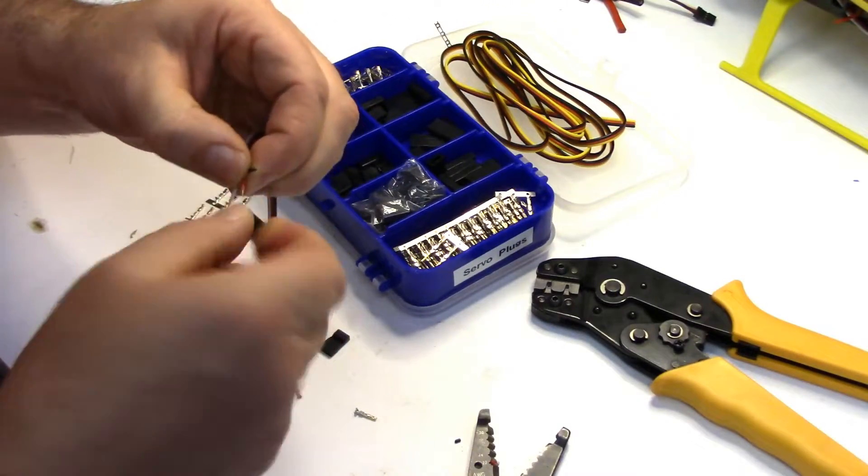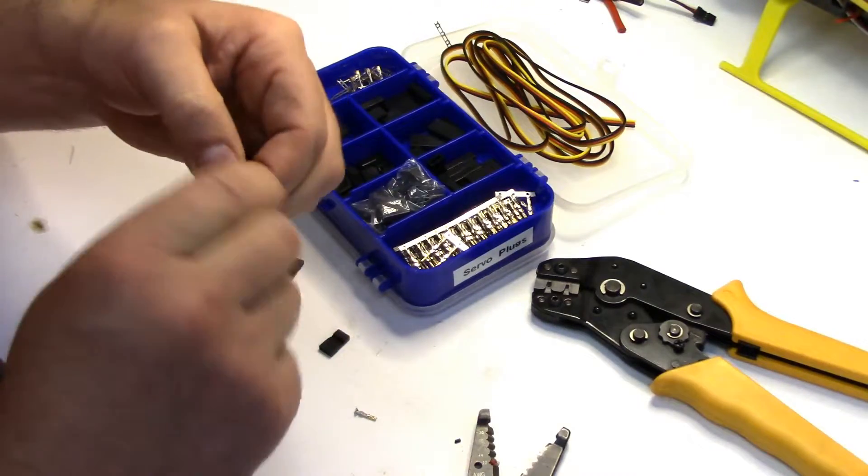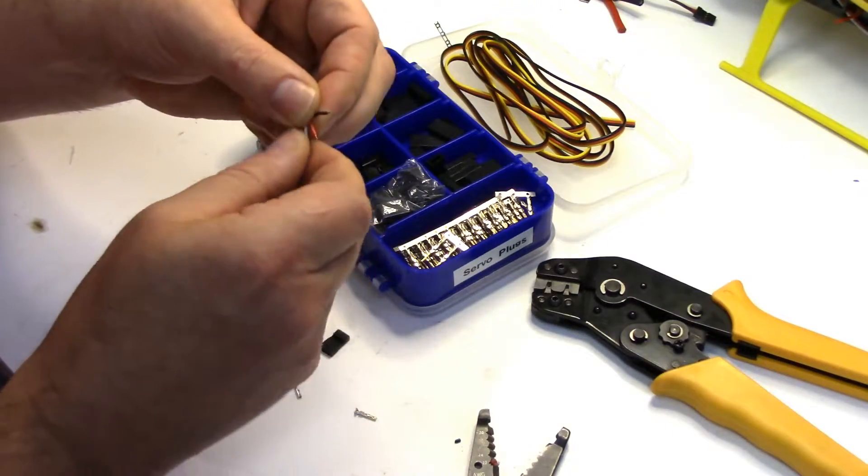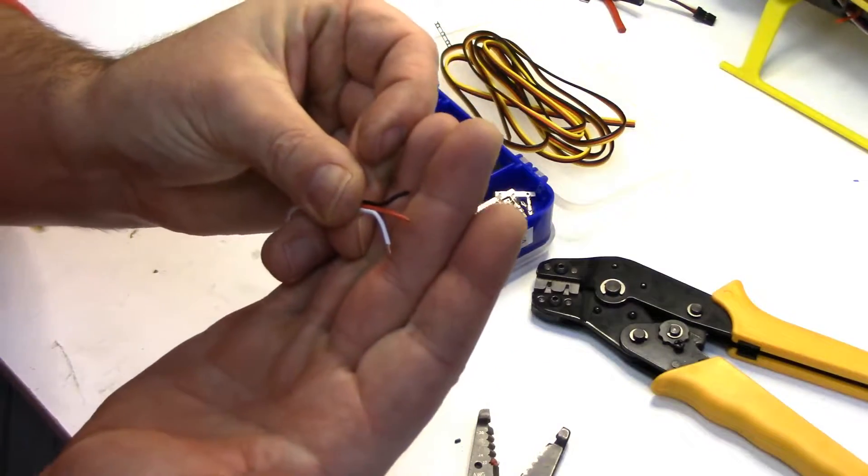And I like twisting the wires just so they don't fray as I'm putting them into the little crimp pin. So that's kind of what we're after.